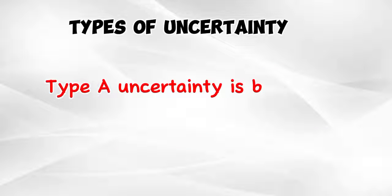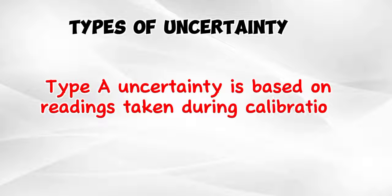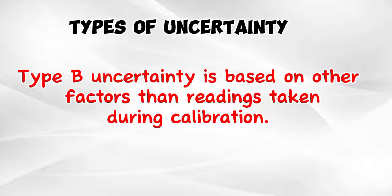Type A Uncertainty is based on readings taken during calibration. Type B Uncertainty is based on other factors than readings taken.